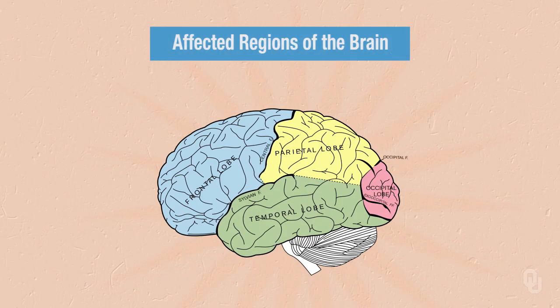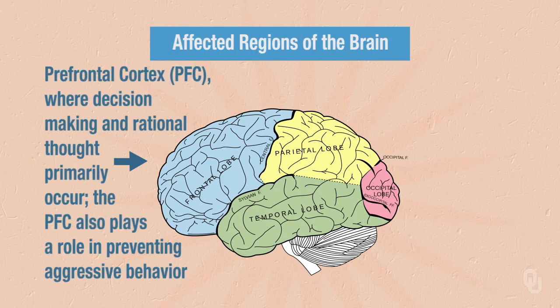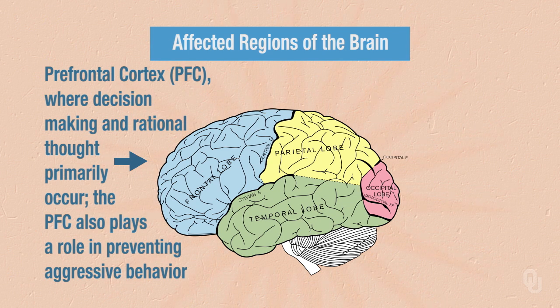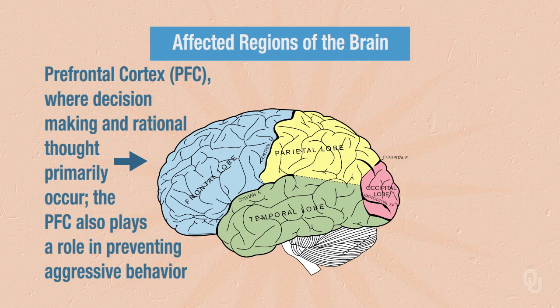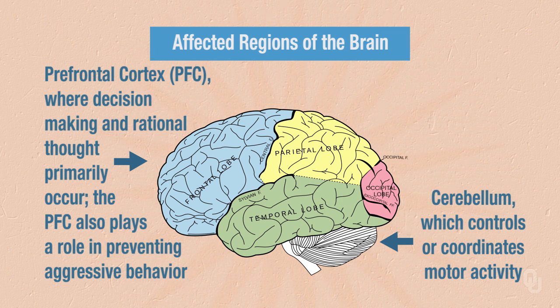To understand how alcohol affects the brain, we need to consider different regions of the brain. The front part of our brain, the prefrontal cortex, is where decision making and rational thought primarily occur. It is also important for preventing aggressive behavior. The cerebellum, the bottom rear portion of our brain, controls or coordinates motor activity.